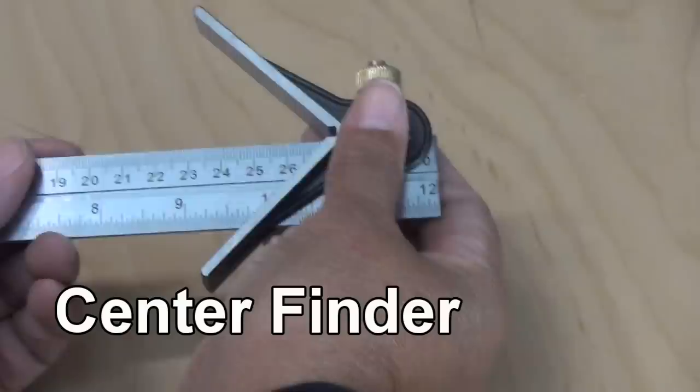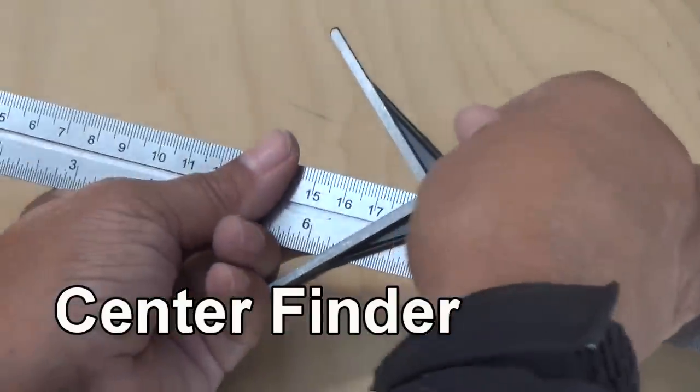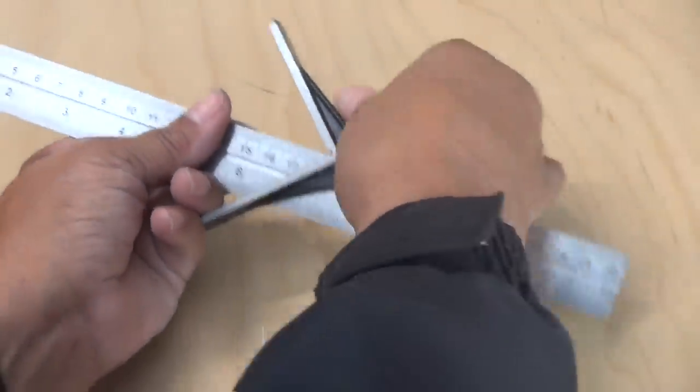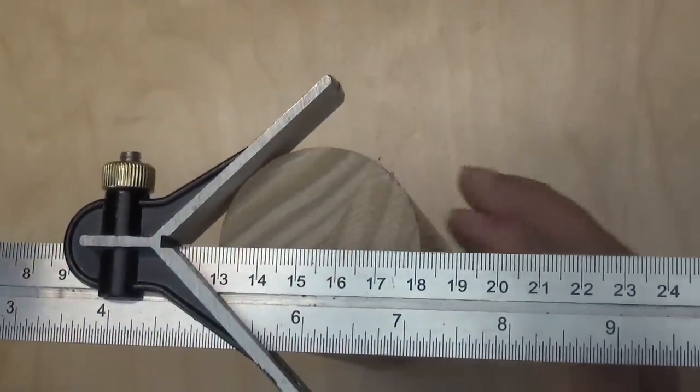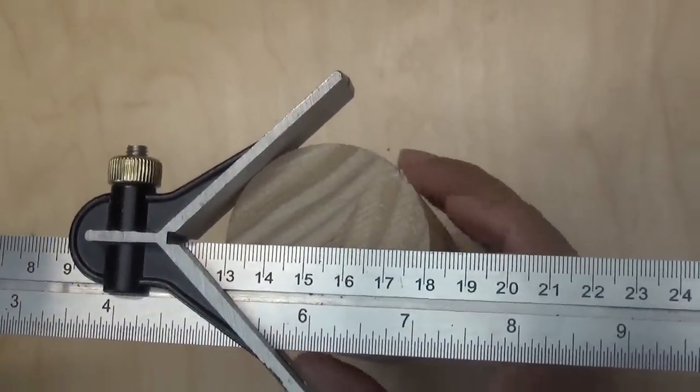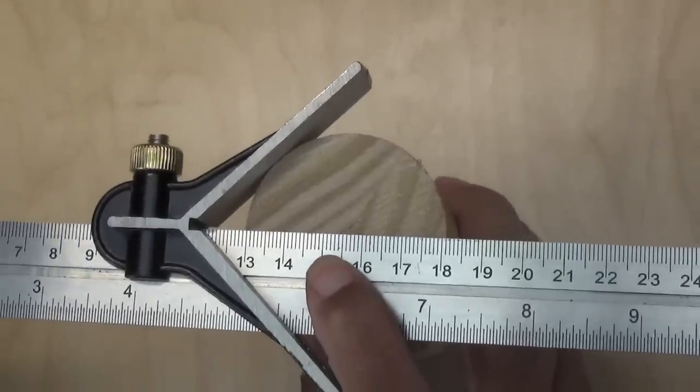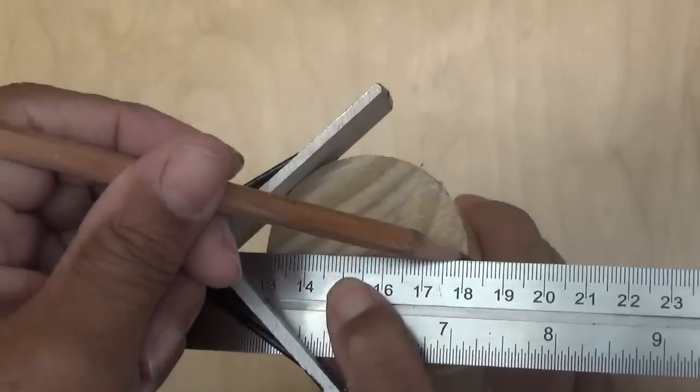Now the first accessory for our combination square is a center finder and you just slide it on the rule. I tighten it up and now I have a wooden dowel here that I'm going to find the center. First I strike a line.